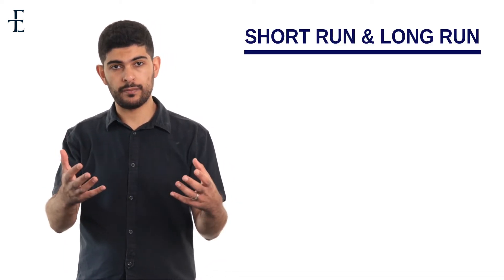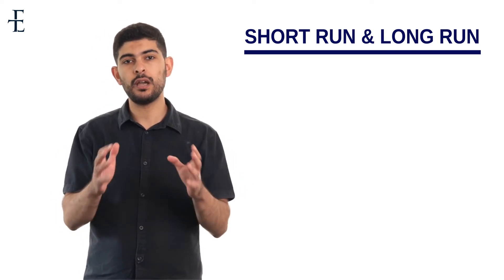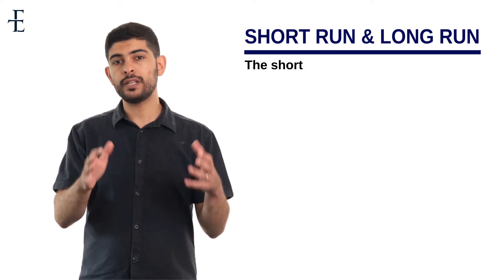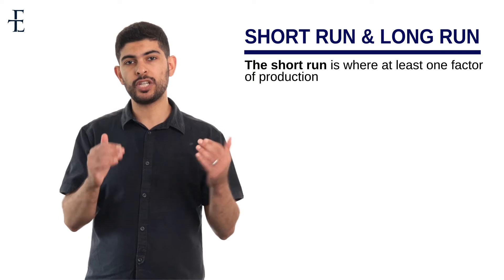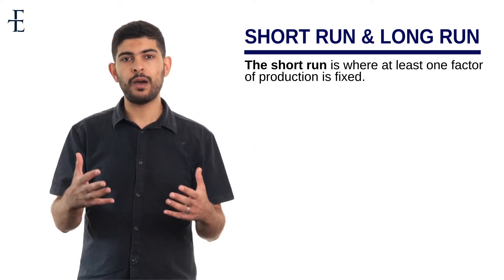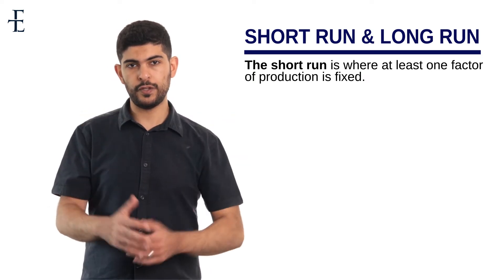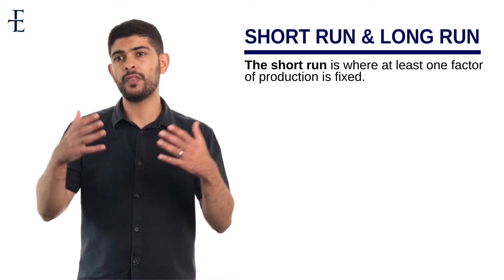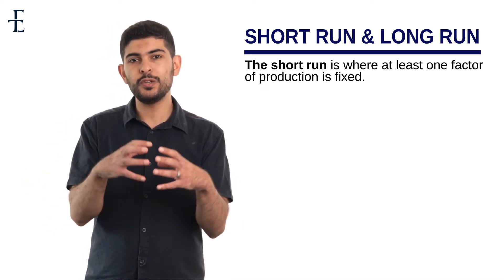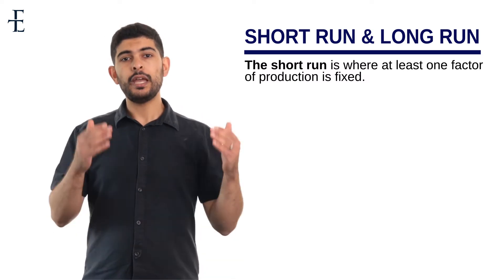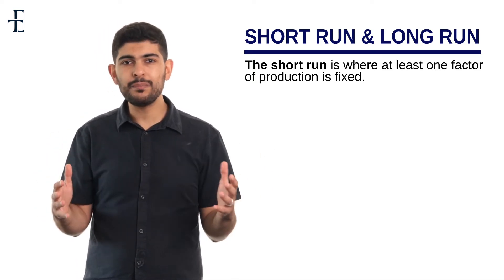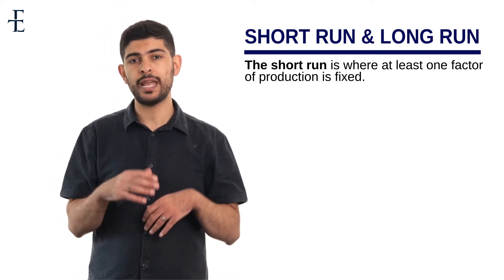One of the things that you need to understand is the distinction between the short run and the long run. The common misconception is that people consider this to be a time frame. That is actually not true, at least not from an economic perspective. The short run is simply where at least one factor of production is fixed. An example, if we talk about rent, is the idea that it's quite difficult for you to relocate to a new factory. It will take a while for you to be able to relocate and find the appropriate factory. Therefore, we would consider you to be in the short run when you're paying your rent.